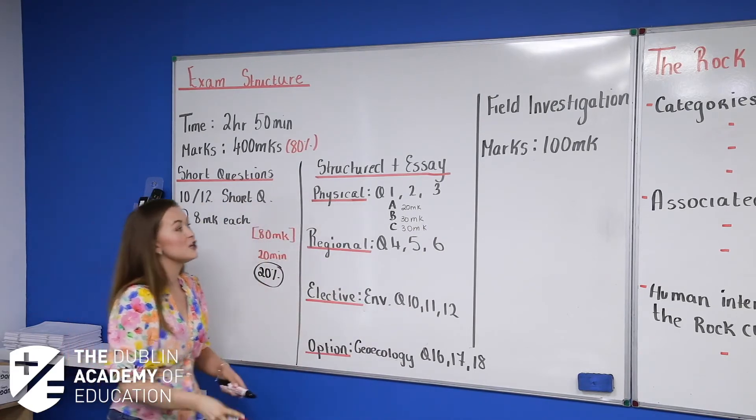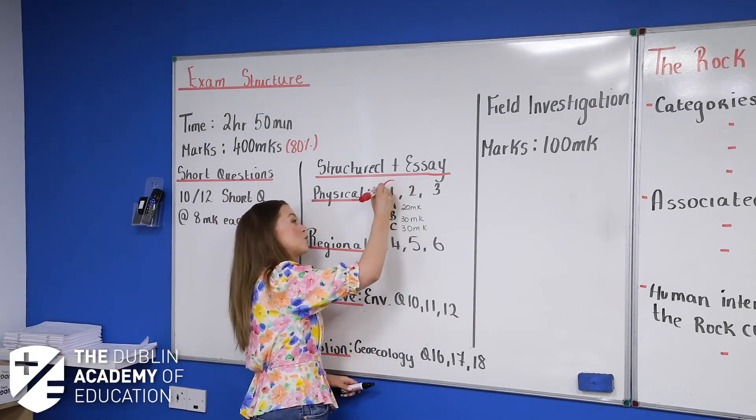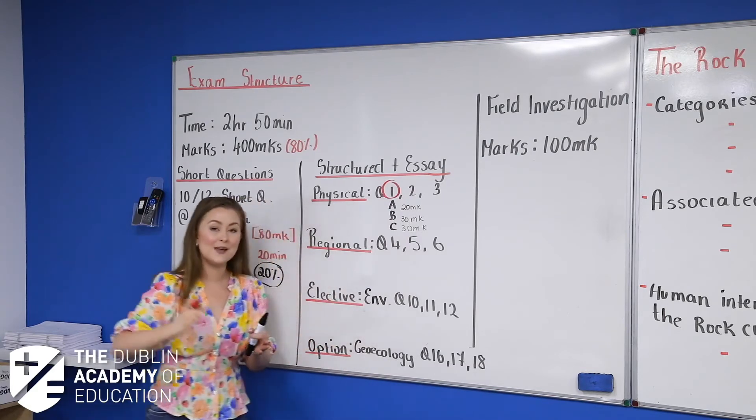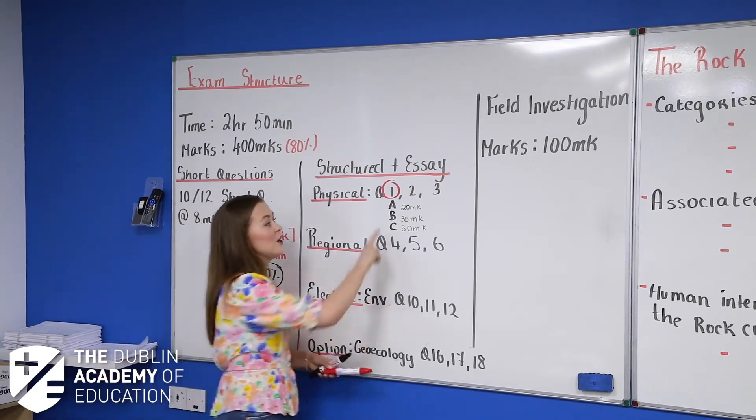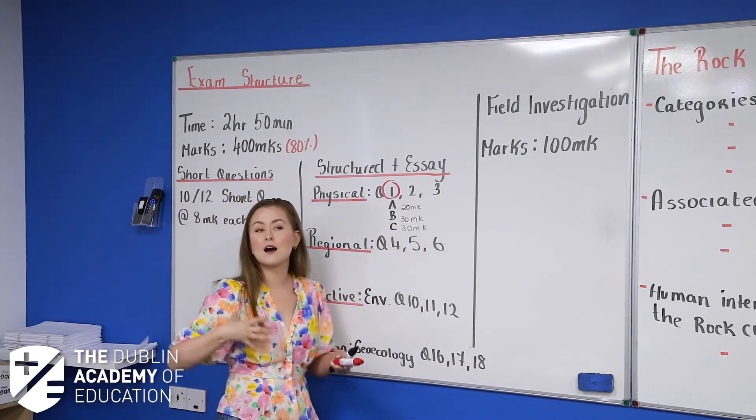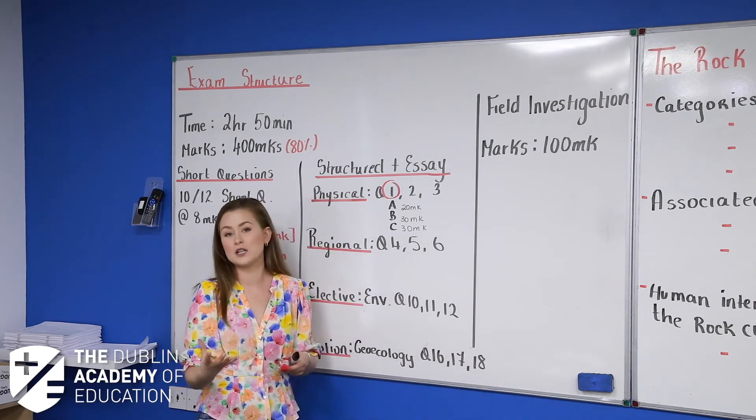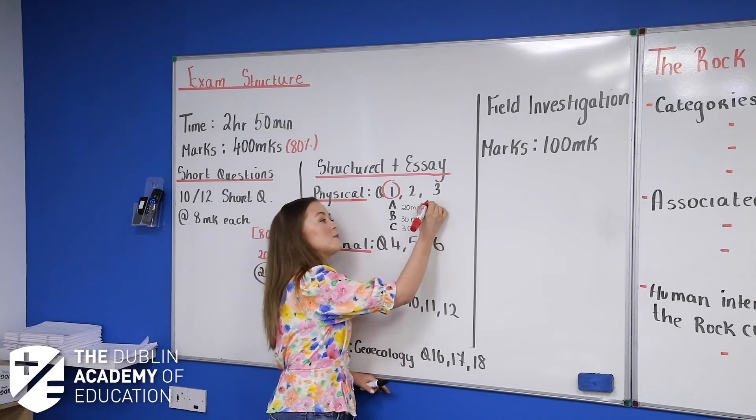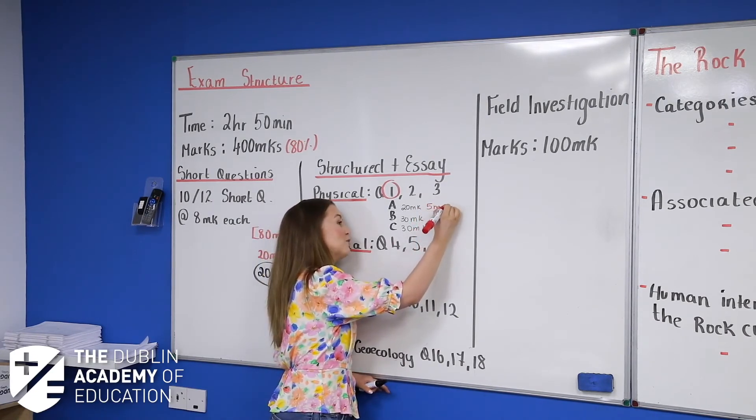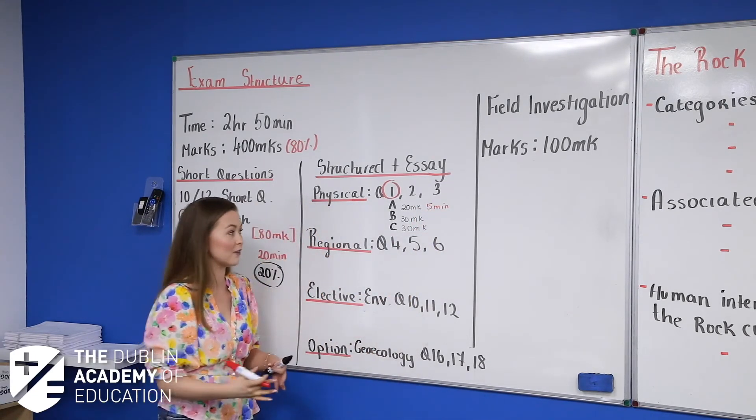So for example, let's say you pick question one, and you're going to answer part A, B, and C for that. Part A is worth 20 marks. It's kind of like a short style question, a couple of little questions on one particular topic. That's worth 20 marks and should take you a maximum of five minutes. So make sure you're noting that down for yourself there.